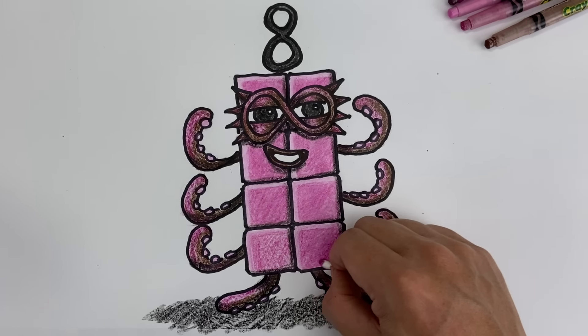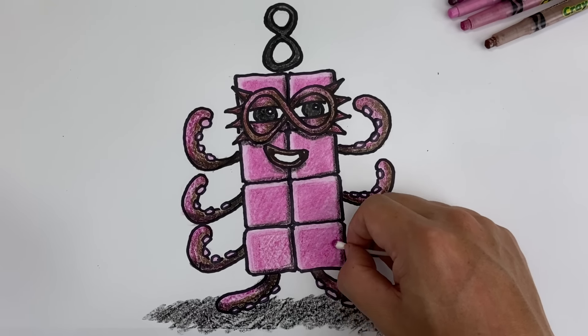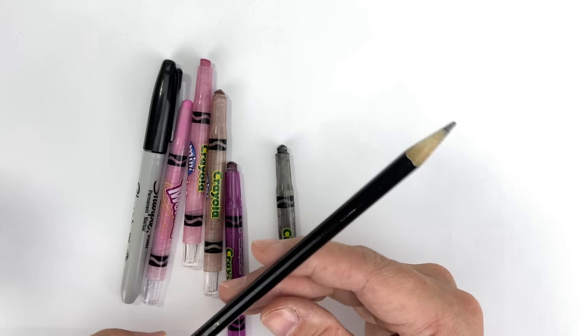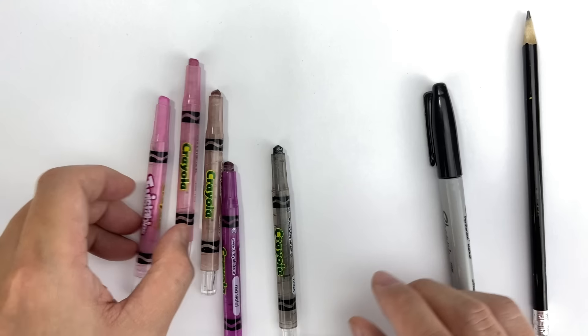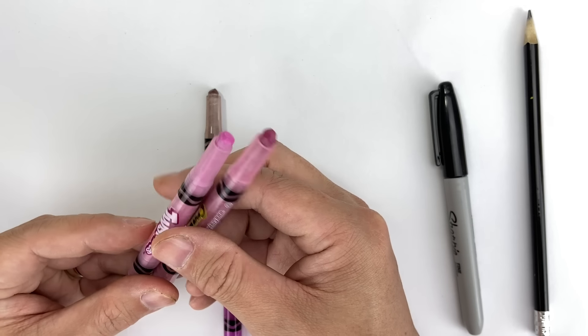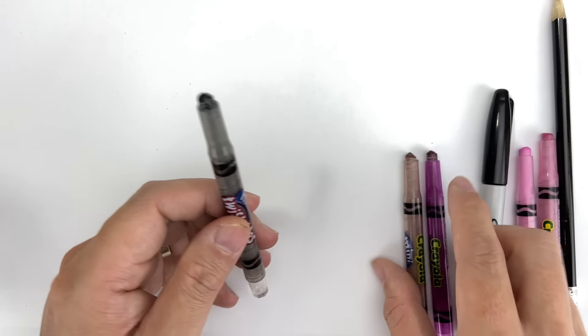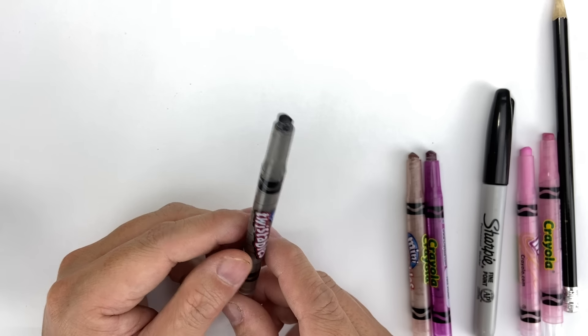First, we'll start with Octoblock. It's easy! All you'll need is some paper, a pencil, a sharpie, and some crayons. Here are two shades of pink, a lighter one and a darker one, a dark purple and brown, and a black. Now we can start!